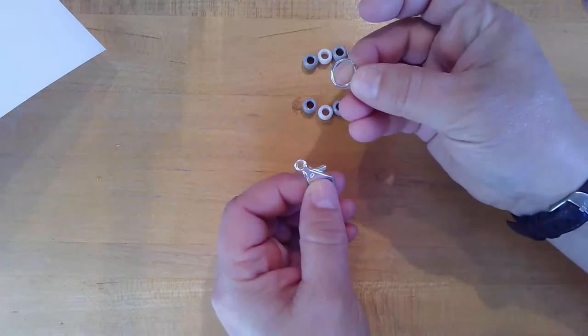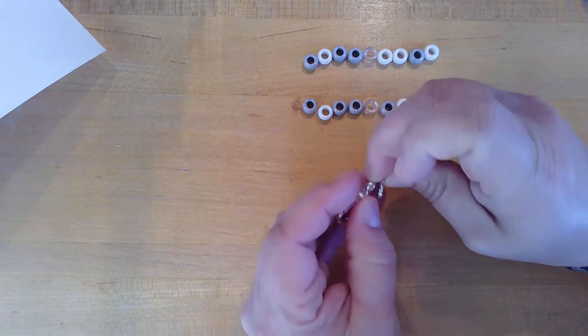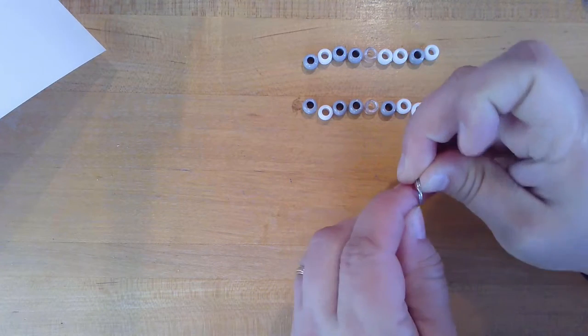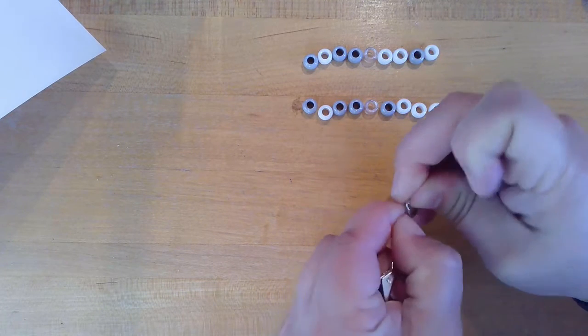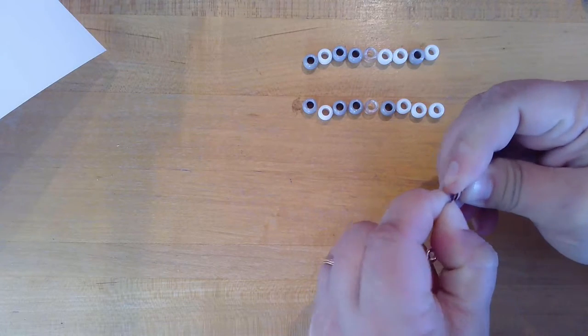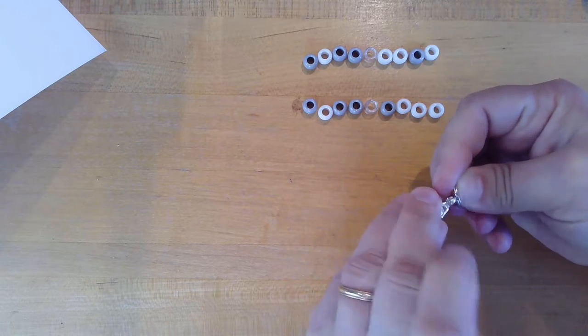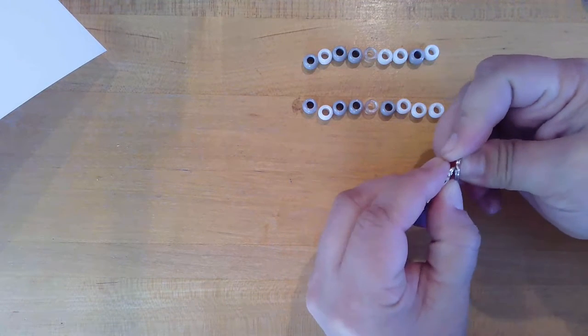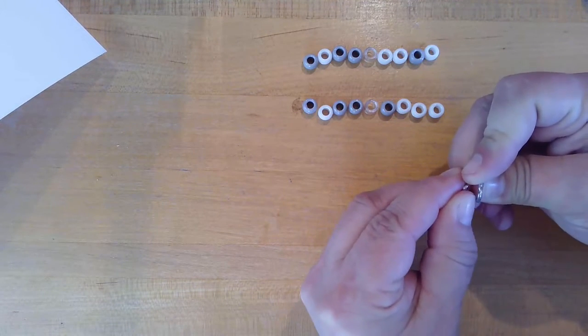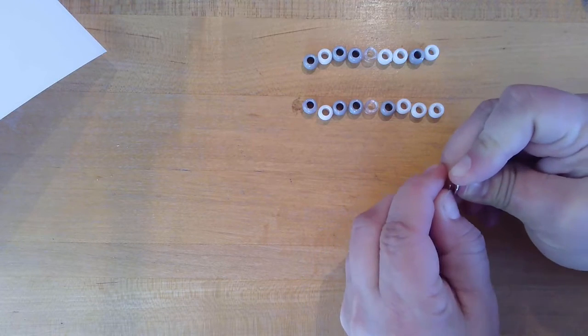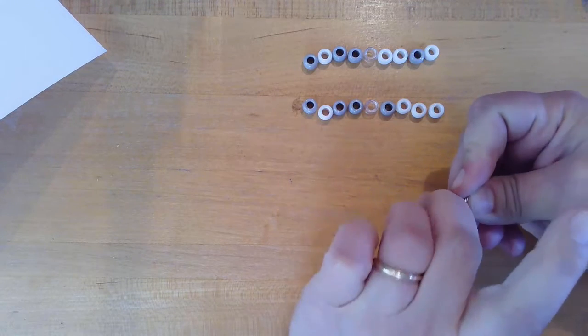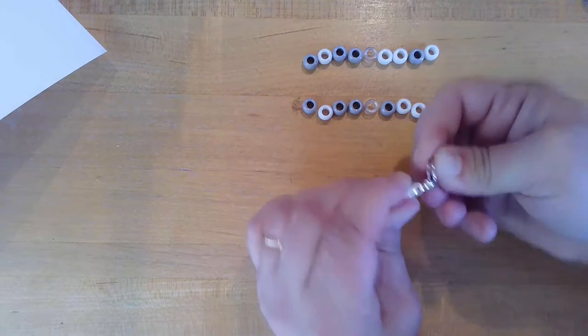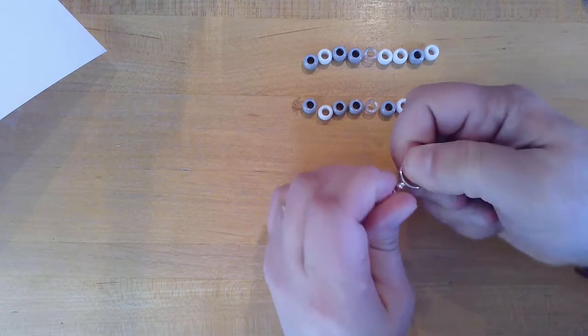Once you have your words set, you're going to put your ring through the loop on the clasp. This may be a little bit difficult. You might need a grown-up to help you with that because it's a little tight. It took me a couple of tries, but you'll get it eventually. There you go. It just hooks through and slide it around.